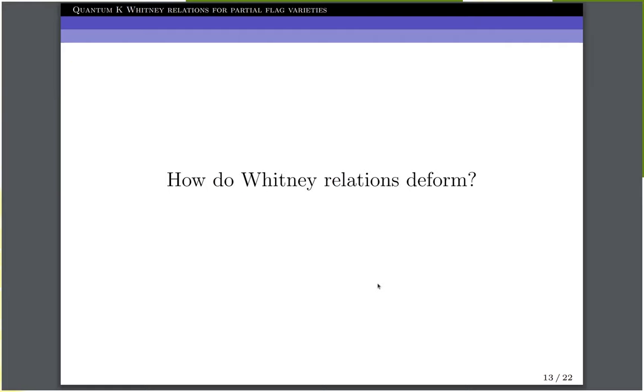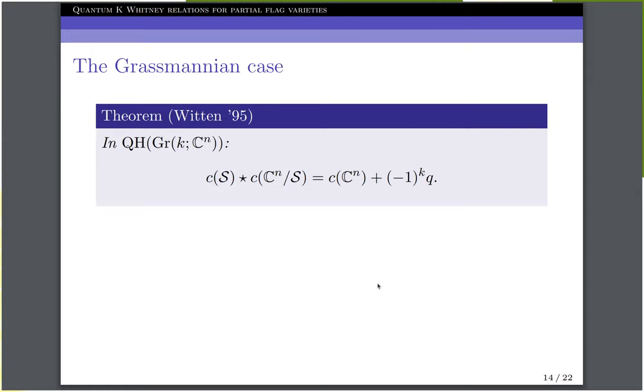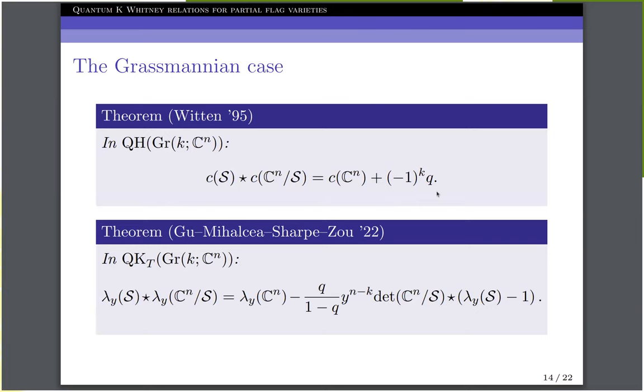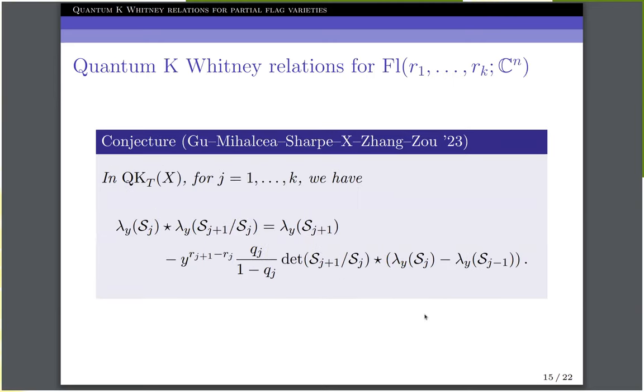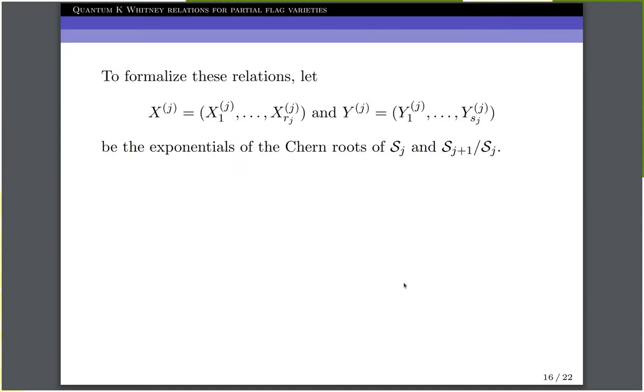So next, we need to study how these Whitney relations deform. For Grassmannians, Witten gave the answer in quantum cohomology, so the deformation is this last term involving Q. In quantum K-theory, this was a recent result of Gu, Mihalcea, Sharpe, and Zou, where you can see that the deformation is slightly more complicated. For general partial flags, we conjecture that the Whitney relations at each step get deformed in a way that is very similar to the Grassmannian case. We can formalize these relations by introducing formal variables for the K-theoretic Chern roots of the tautological bundles and their successive quotients.